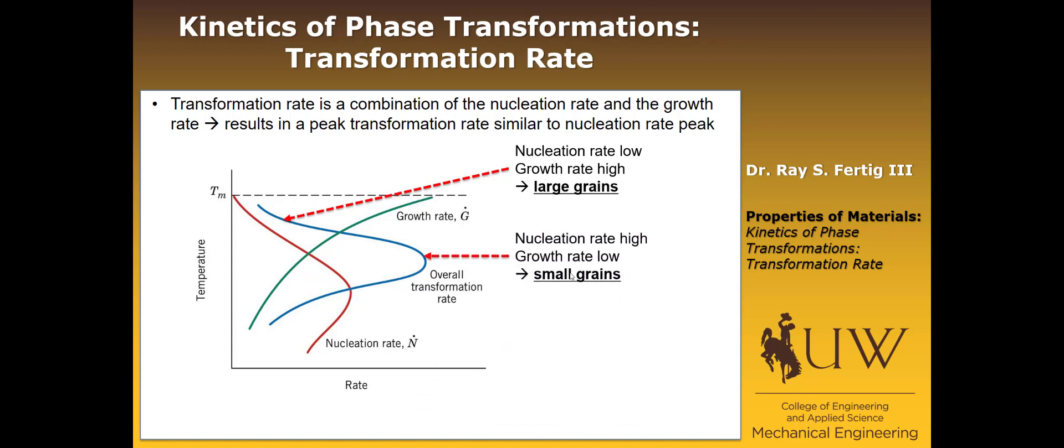So if we reduce the temperature a little bit, then our nucleation rate speeds up, but our growth rate slows down. So if we make the nucleation rate high and the growth rate low, we expect to have many small grains instead of a few large grains.